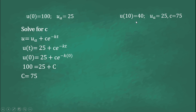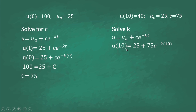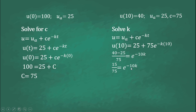Next, since u(10) equals 40, u sub a equals 25, and C equals 75, we can now solve for k. Using the equation u equals u sub a plus Ce raised to negative kt, we substitute: u(10) equals 25 plus 75e raised to negative 10k. Since u(10) equals 40, transposing 25 gives us 15 equals 75e raised to negative 10k. Dividing both sides by 75, we get 15 over 75 equals e raised to negative 10k.